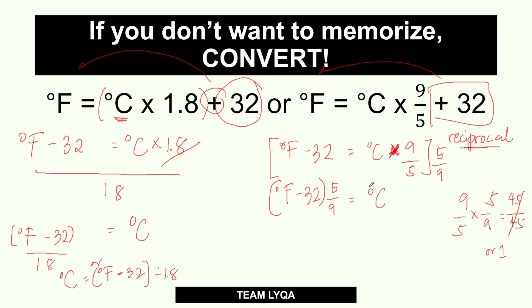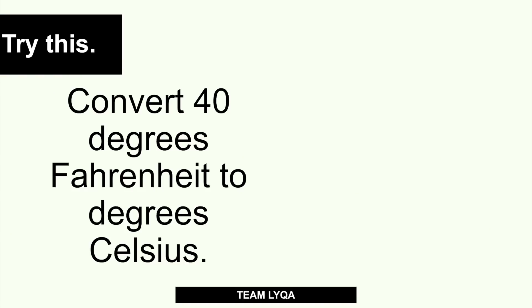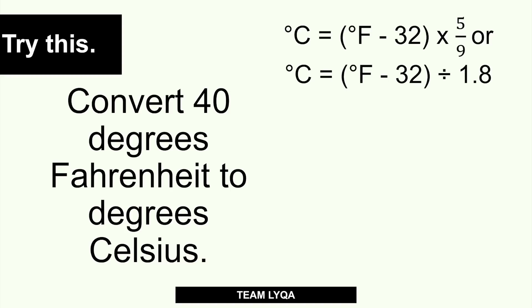Now, why did I show you this derivation process? Just in case, like me, you don't want to memorize many formulas — you could memorize just one, either the Celsius-to-Fahrenheit or the Fahrenheit-to-Celsius, and then manually rearrange it as needed. It's your choice. What we derived — or the official term is 'derived' — the Fahrenheit-to-Celsius formula was taken from the original Celsius-to-Fahrenheit formula. We have the fraction form and the decimal form; use whichever you're more comfortable with.